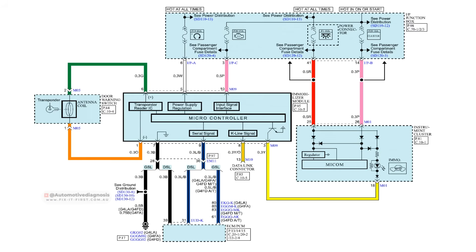Any time you want to start the engine, the ECM will ask the immobilizer control unit to send information and authorization to start the car. If the ECM doesn't get the authorization, you can crank the engine but you won't be able to start it. Looking at the immobilizer control unit, you have a K-line signal and a serial signal. That K-line signal is actually between the immobilizer control unit and the data link connector (DLC/OBD2), which is used for communication between a scan tool and the immobilizer. Today we're going to look at the serial signal, which is also a K-line network — that's how the immobilizer control unit communicates with the ECM.